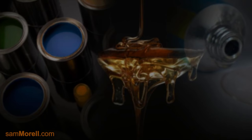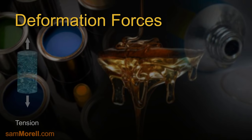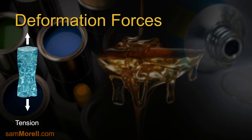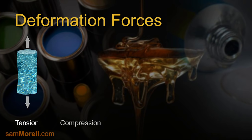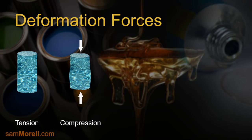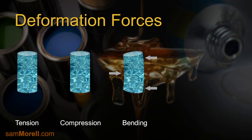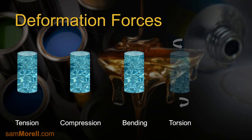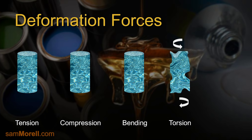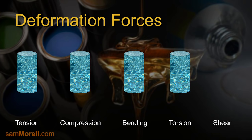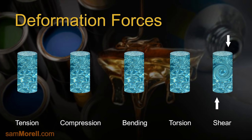There are different forces that can act on any state of matter. They include tension — aligned forces pulling apart the material. Compression — aligned forces pressing the substance. Bending — unaligned forces applied to opposite sides of the material. Torsion — forces twisting a substance. And shear — unaligned forces pushing one part of a material in one direction and another part in the opposite direction.